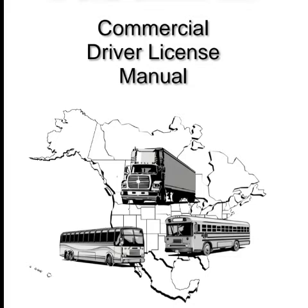1.3.5 Railroad Highway Grade Crossing Violations. You will lose your CDL for at least 60 days for your first violation, for at least 120 days for your second violation within a three-year period, and for at least one year for your third violation within a three-year period. These violations include violation of a federal, state, or local law or regulation pertaining to one of the following six offenses at a railroad highway grade crossing: for drivers not required to always stop, failing to stop before reaching the crossing if the tracks are not clear; failing to slow down and check that the tracks are clear of an approaching train; for drivers always required to stop, failing to stop before driving onto the crossing; for all drivers, failing to have sufficient space to drive completely through the crossing without stopping; failing to obey a traffic control device or the directions of an enforcement official at the crossing; and failing to negotiate a crossing because of insufficient undercarriage clearance.